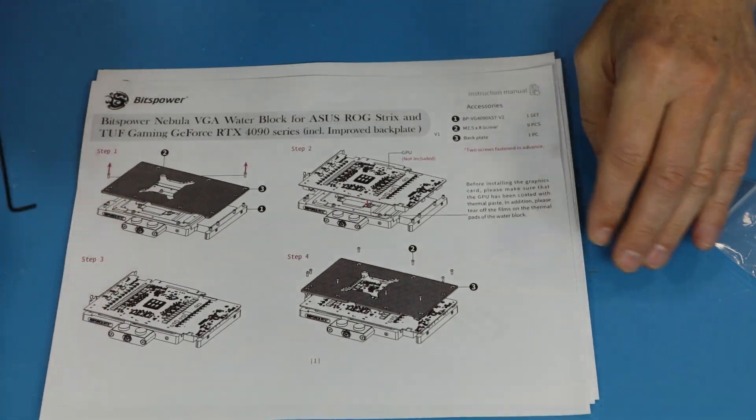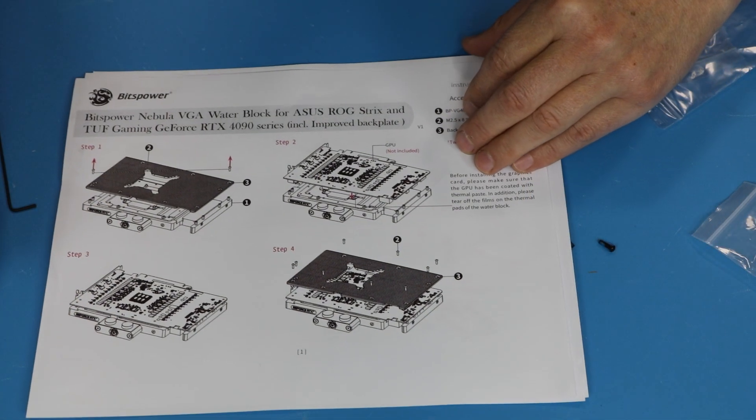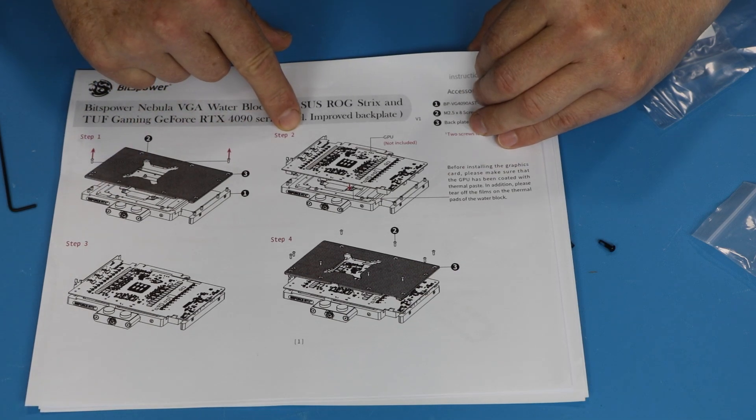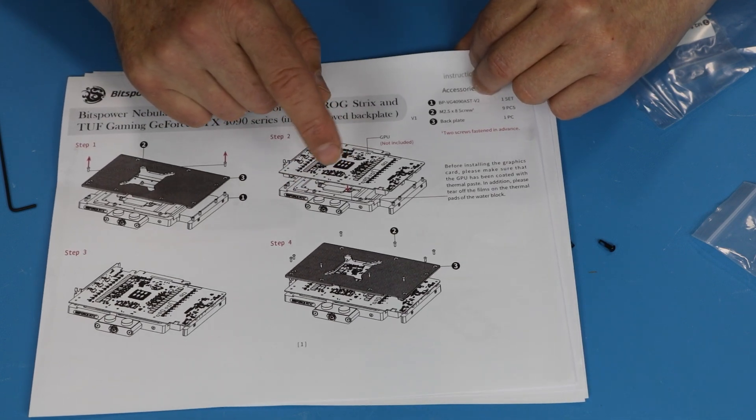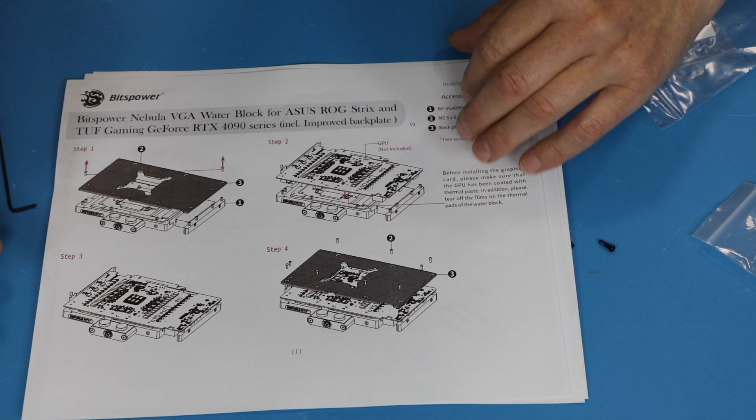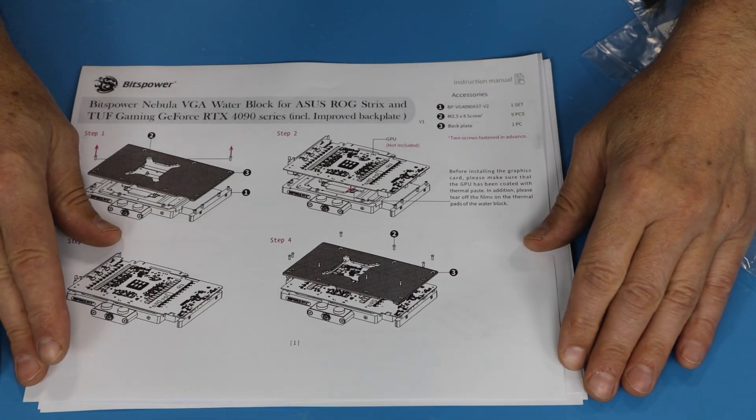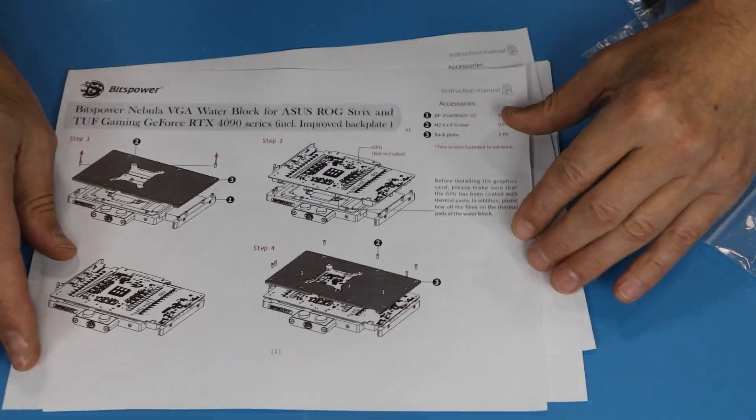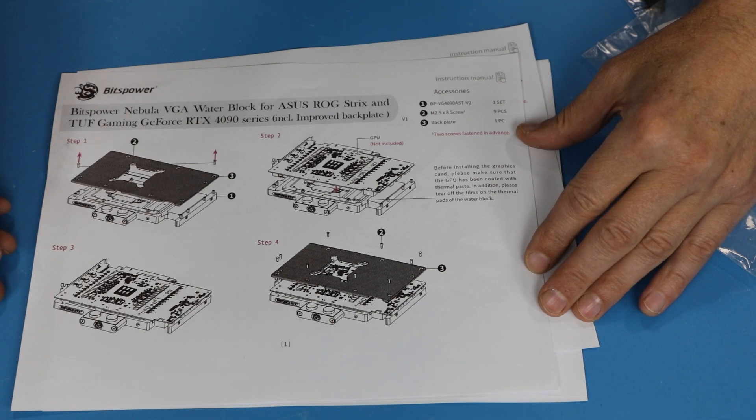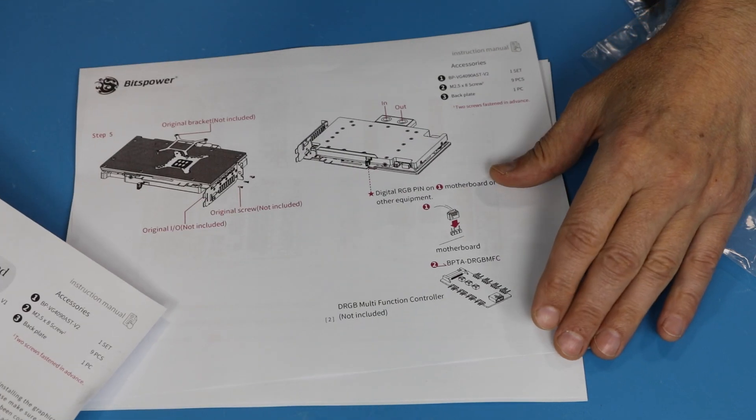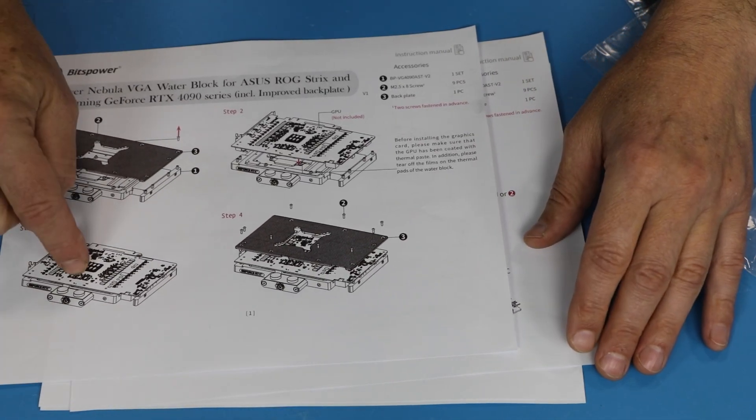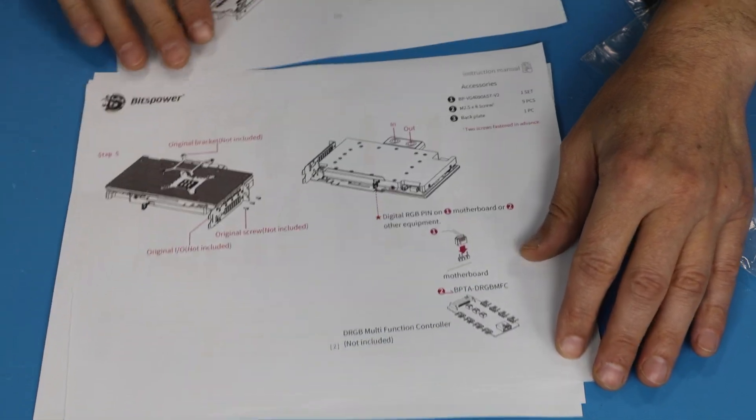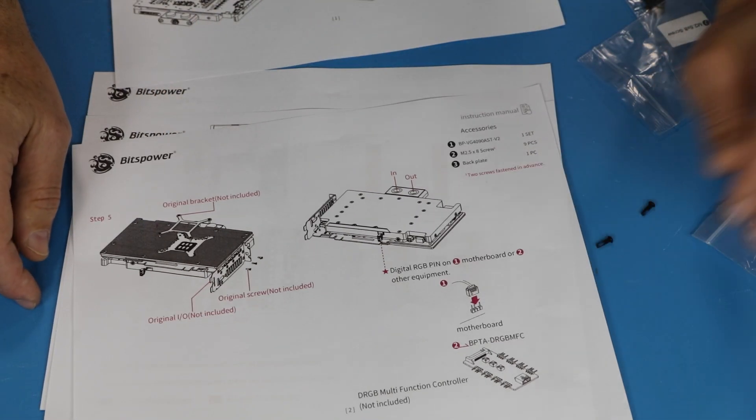Let's see what the manual is suggesting here. Step one, remove backplate—we already did that. Step two, basically just put it on. They're not even saying that you need to apply thermal paste here, but I guess most people should know that. We put it down with just the screws, they don't even show which screw.